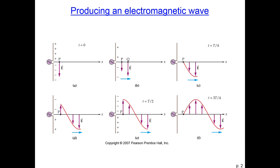Okay, so now we've learned how alternating current works. Next we want to know how alternating current can produce electromagnetic waves.